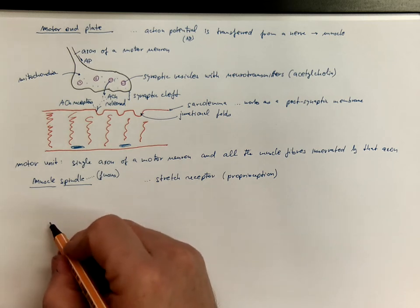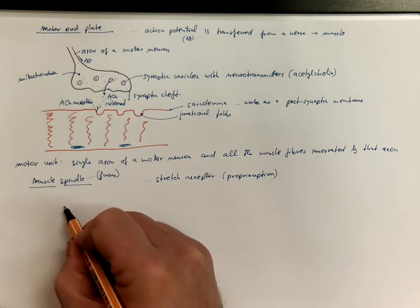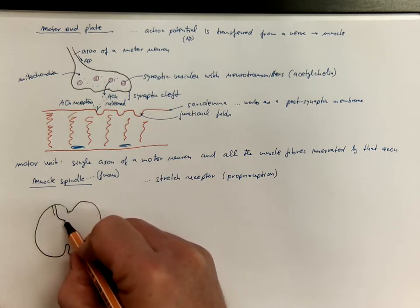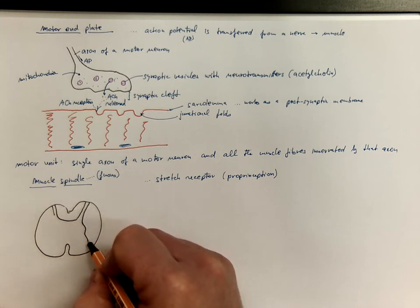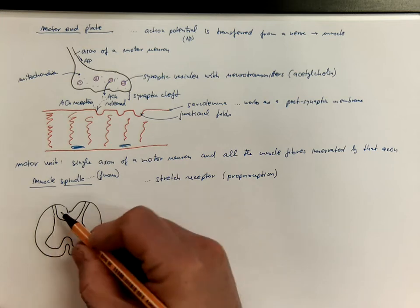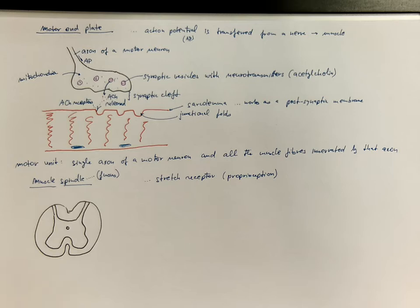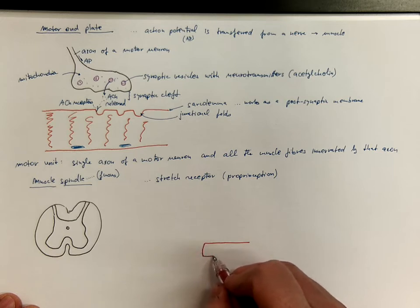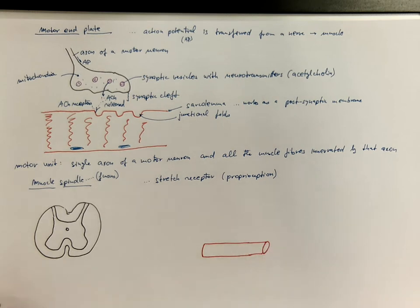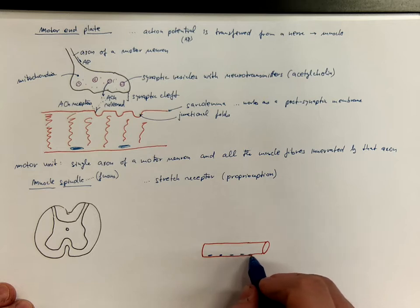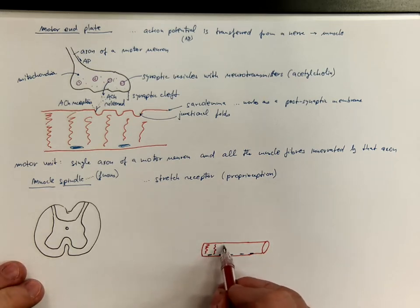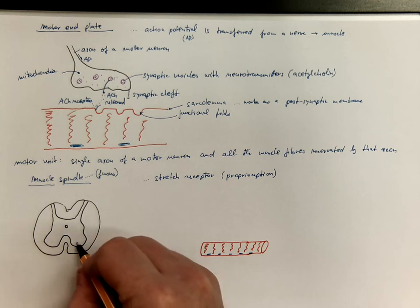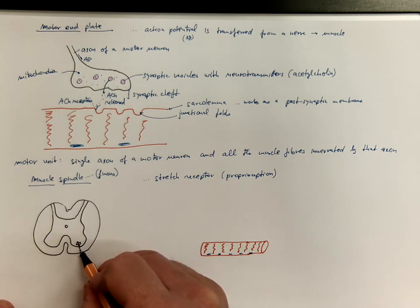So let's consider the spinal cord. The gray matter of which has the dorsal horns and ventral horns. Here will be the central canal. And we already know that the regular muscle fibers that generate force are innervated by motor neurons. So these are the skeletal muscle fibers, and they are innervated by motor neurons that are located in the anterior horns.